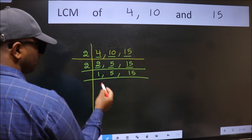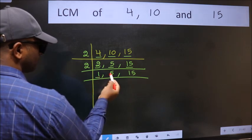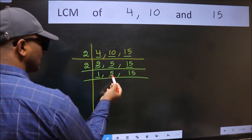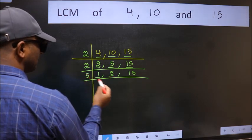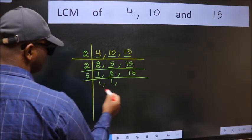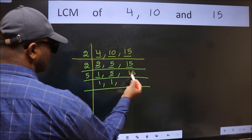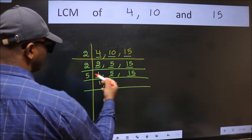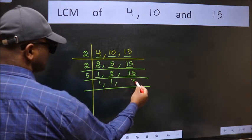Now we got 1 here, so focus on the next number 5. 5 is a prime number, so 5 into 5. The other number 15, when do we get 15 in 5 table? 5, 3 is 15.